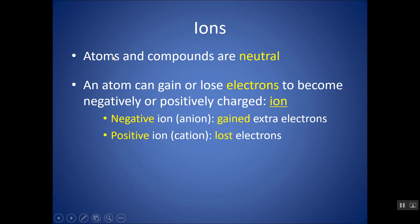So in an atom, you have equal numbers of protons and electrons. In an ion, that's no longer true. So if you have gained electrons — since electrons are negative and they now outnumber the positive protons — you would end up having a negative charge. And sometimes we call these negative ions anions. If an atom loses electrons — electrons are negative — now your positive protons outnumber the electrons, and you would have a net positive charge. And we call these positively charged ions cations.